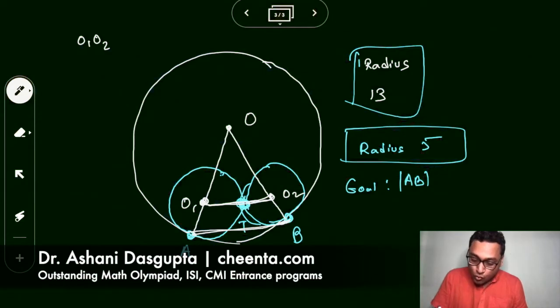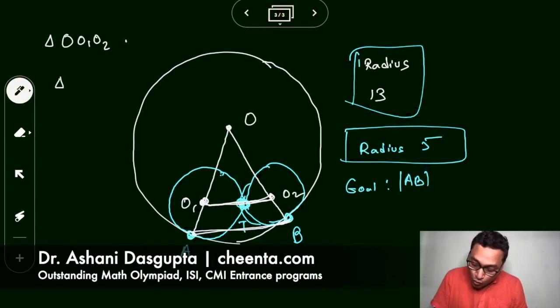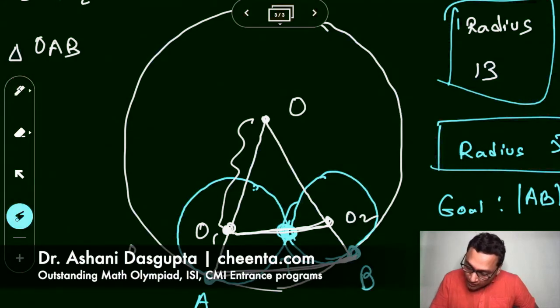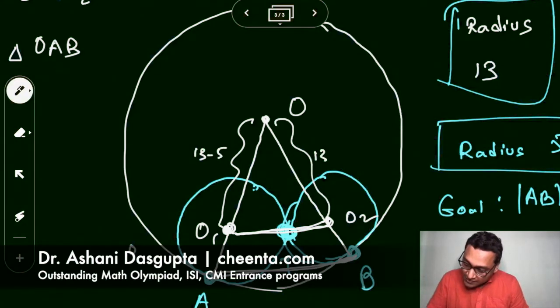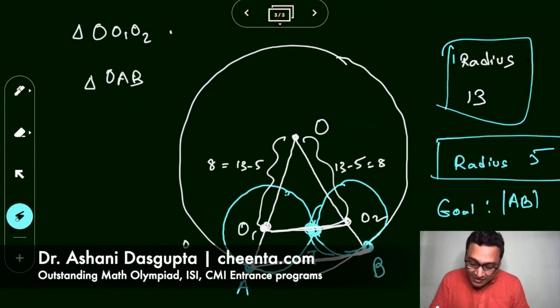So we have two triangles here: O1, O2, O - this is the first triangle, the smaller one - and then we have the larger triangle, which is triangle OAB. The first thing is that these two triangles are similar to each other. Why is that? First notice that OO1, the length of OO1, this is total radius which is 13 minus 5, the small radius, right? So this is 13 minus 5, and this is also 13 minus 5, which means both of these are 8, and these two are 13 of course. So this means that both of these triangles are isosceles triangles, and in fact they are similar.